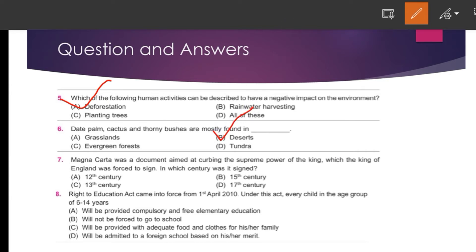Our next question is: Magna Carta was a document aimed at curbing the supreme power of a king. Which king of England was forced to sign it, and in which century was it signed? The answer is the 13th century.